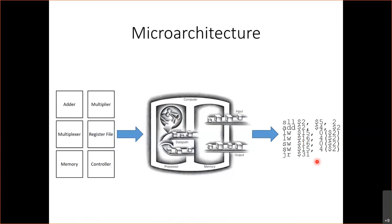So today we're going to start putting everything together and look at how processors are built. There are two parts of the processor: the data path, which is the part that does all the operations and executes the instructions, and the memory, where all the data is. We're going to start by talking about the data path — the part that executes all the operations and accesses the memory. Later on, we'll look at how memory is structured.